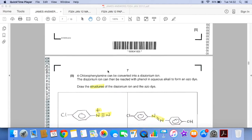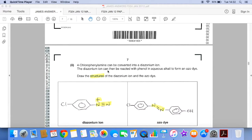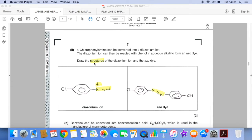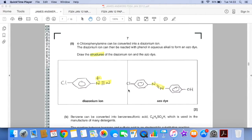So the next part of the question, draw the structures of the diazonium ion and azo dye formed from 4-chlorophenylamine. So there's the diazonium ion. And just be careful, the positive charge goes on the first nitrogen and it's N triple bond N. And then the azo dye that would form by reacting this with phenol would look like this.